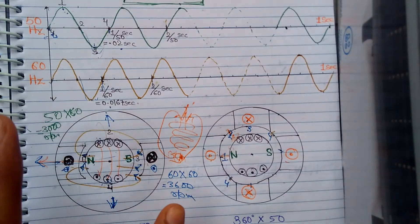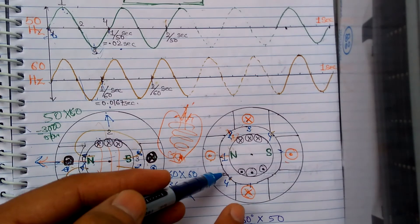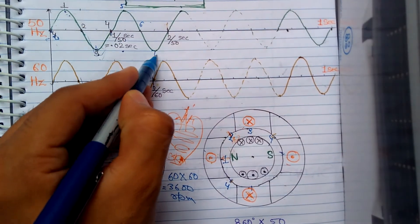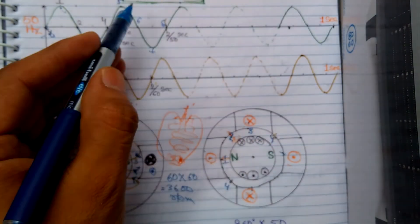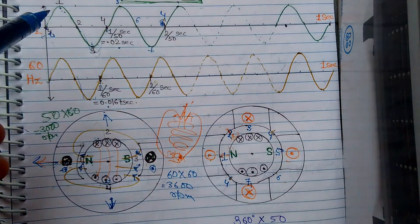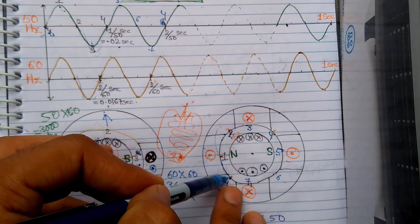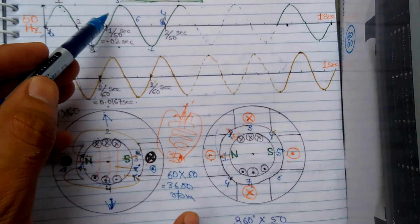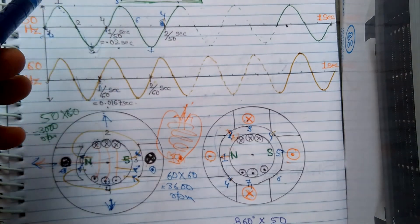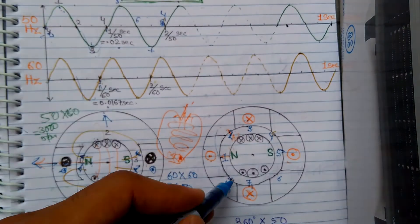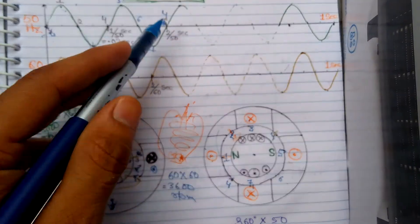In the two-pole machine, completing one cycle required one full revolution of 360 degrees. But here in the four-pole machine, I only need half a revolution — 180 degrees — to complete one electrical cycle. In one complete revolution of 360 mechanical degrees, I am consuming two electrical cycles, as you can see here.